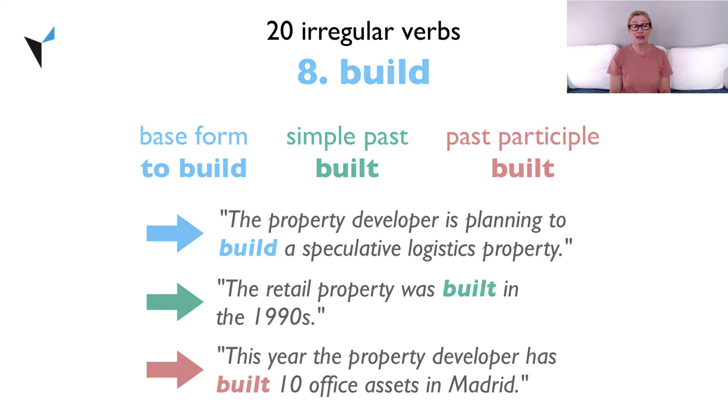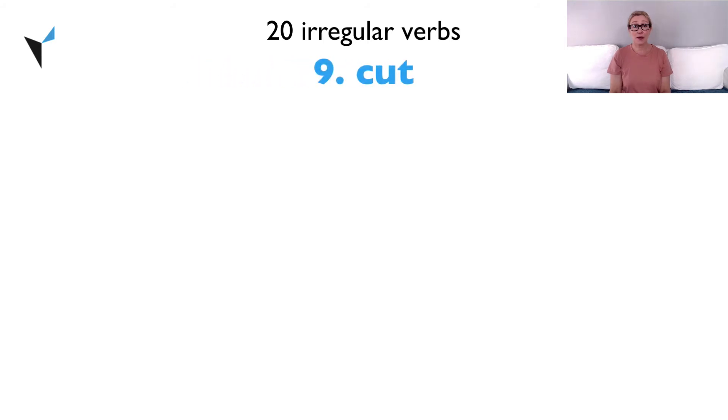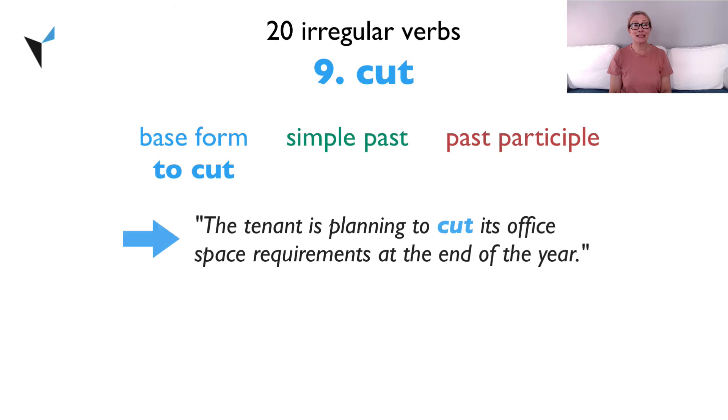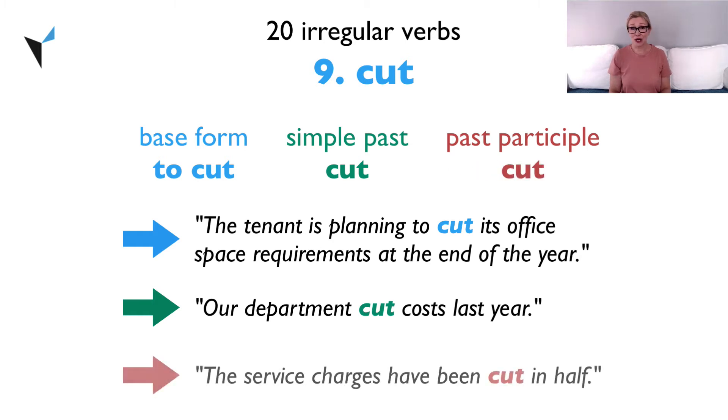Verb nine, cut. The base form is to cut. The tenant is planning to cut its office space requirements at the end of the year. The simple past is cut. Our department cut costs last year. The past participle is also cut. The service charges have been cut in half.